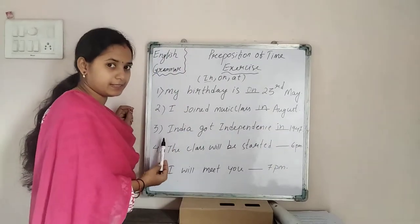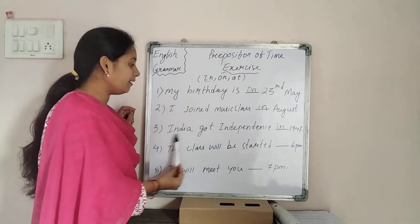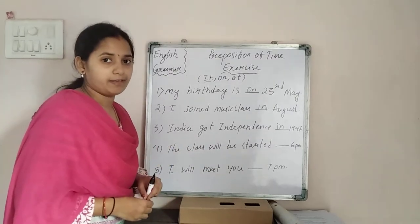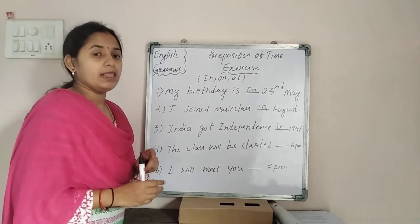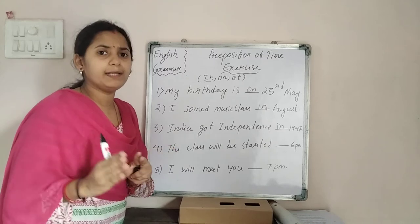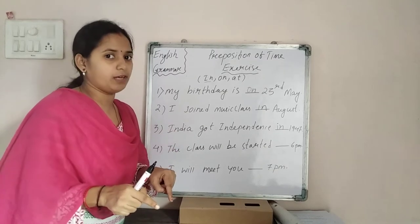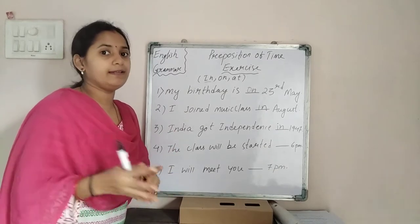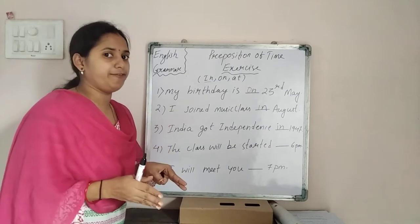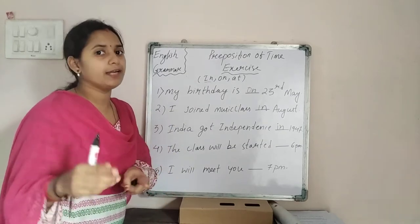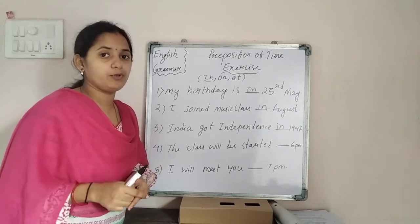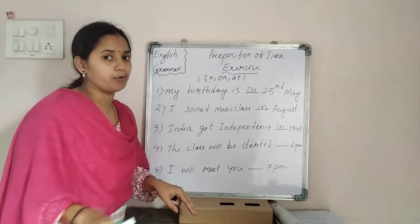India got independence in 1947. Now, if we say India got independence on 15th August in 1947 — if a date is there we use on, and if we are talking about the year we use in. So on for date, in for year.